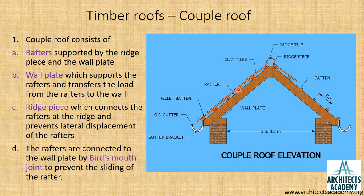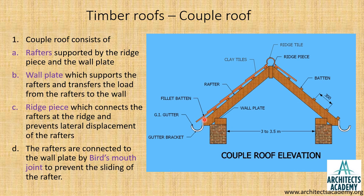On top of the rafters, the members spaced at approximately 300mm center to center are called battens. These battens run across at right angles to the rafters and help in holding the clay tiles. Mangalore tiles are placed on top of the battens and overlapped on each other. The last batten is called the fillet batten, whose function is to maintain the slope of the tiles. The fillet batten has a slightly greater height, equal to the thickness of the tile. Water flowing down the tiles falls into a galvanized iron gutter.